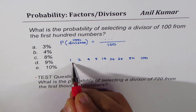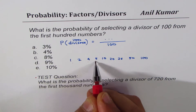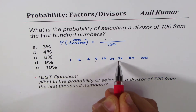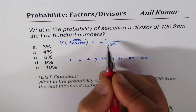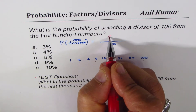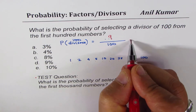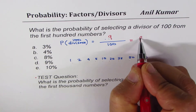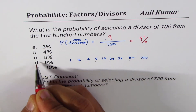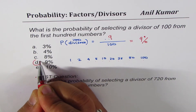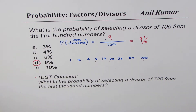Let's count the divisors: 1, 2, 3, 4, 5, 6, 7, 8, 9. So we have 9 in the numerator, and therefore the answer is 9%. The correct option is 9%.